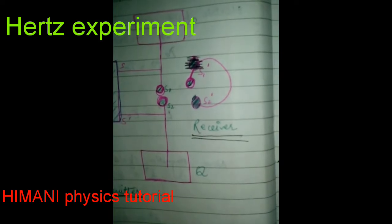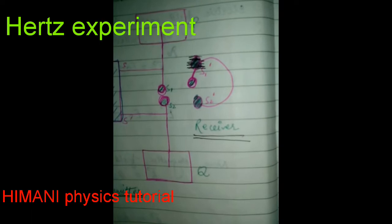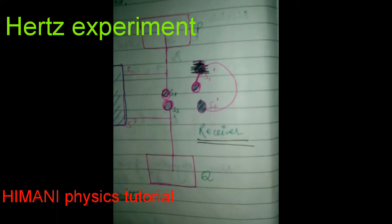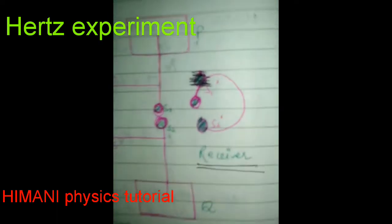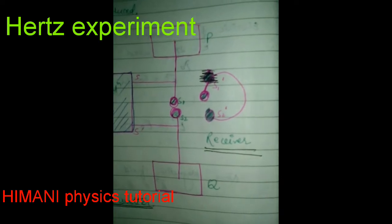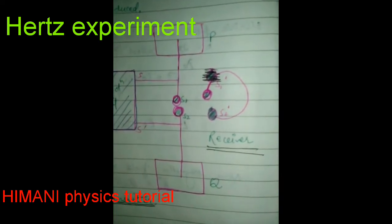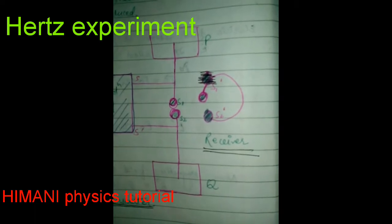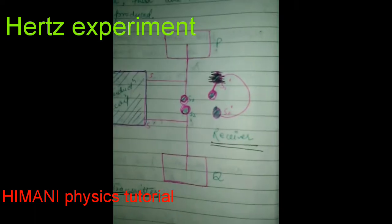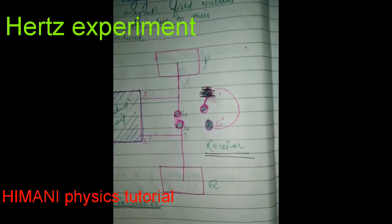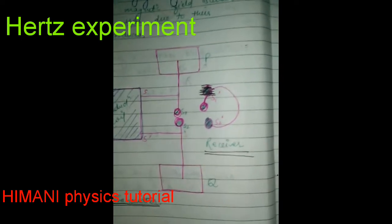The ions formed are oscillated by the electric field, and due to their oscillation, EM waves are produced. After some time, a spark is produced between the spheres. From the presence of the spark, Hertz concluded that due to the oscillation of ions, EM waves are produced which propagate towards the gap between S1 and S2. The EM waves carry a high electric field, which charges the metal spheres S1' and S2', ionizing the air in the gap between them. This is the Hertz experiment.